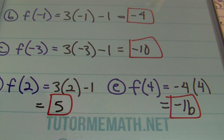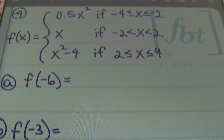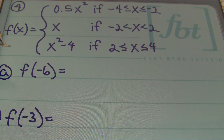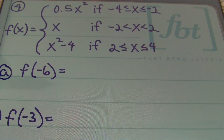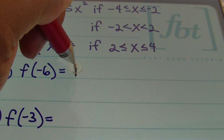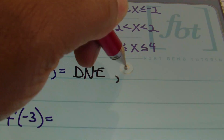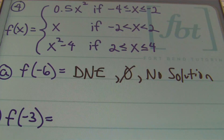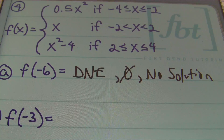Moving on to problem number four. We're asked to find the y value when x equals negative six. Our conditions are not defined when x equals negative six. Depending on your teacher's preference, you can state the answer does not exist, is undefined, or there is no solution, because our piecewise function is not defined for x equals negative six — it's outside the domain.